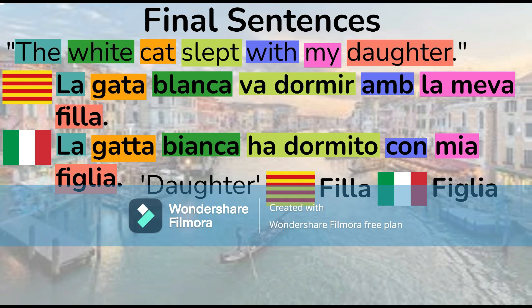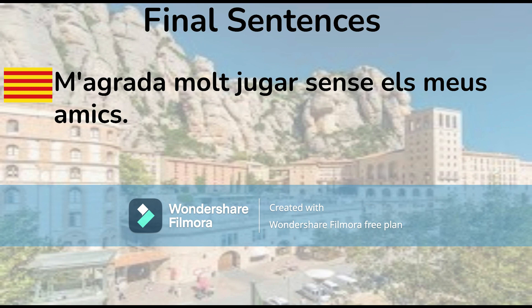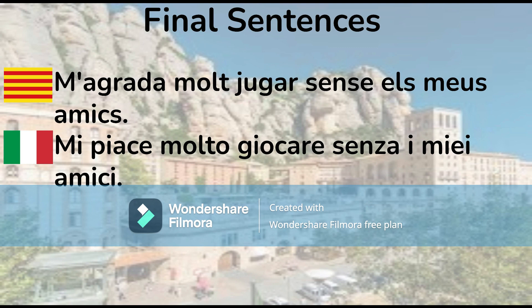Notice that the words for daughter are cognates: 'filla' in Catalan, 'figlia' in Italian. Remember, double L in Catalan often corresponds to GL before I or E in Italian, which makes the sound 'gliò.' And one more pair of sentences: in Catalan 'em agrada molt jugar sense els meus amics,' and in Italian 'mi piace molto giocare senza i miei amici.'